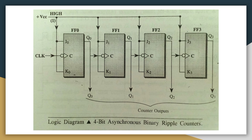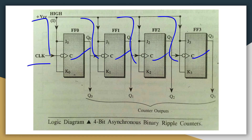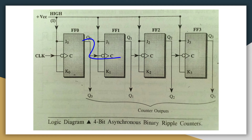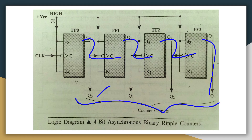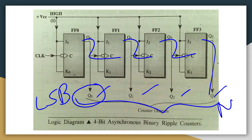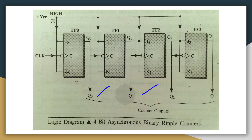This is the block diagram of the four-bit asynchronous binary ripple counter, using four JK master-slave flip-flops. All inputs are connected to +Vcc. Only the first flip-flop receives the clock; the output of each flip-flop is given as the clock to the next. The outputs are labeled Q0, Q1, Q2, and Q3, where Q0 is the LSB and Q3 is the MSB.